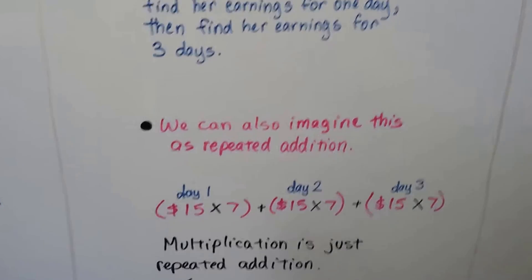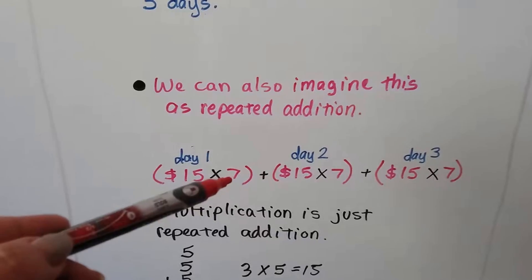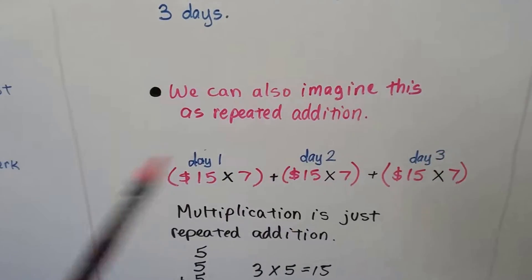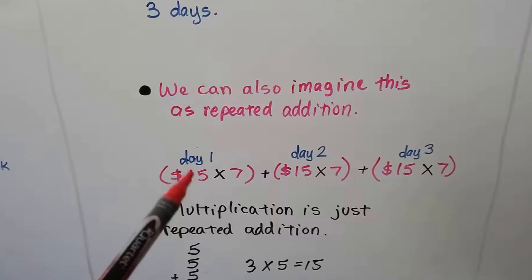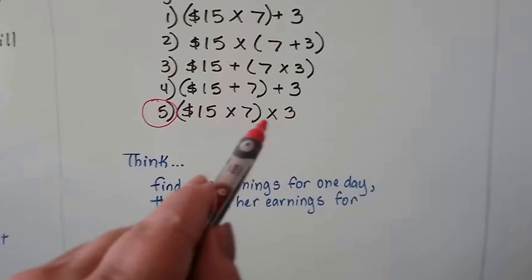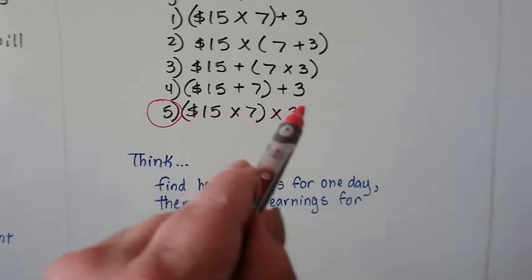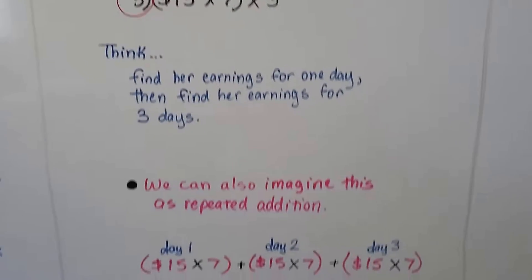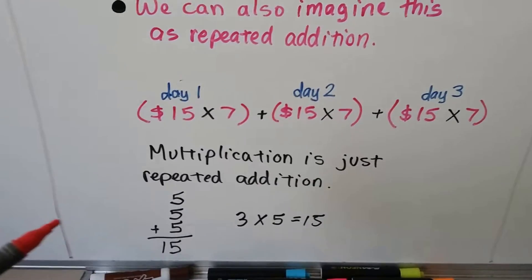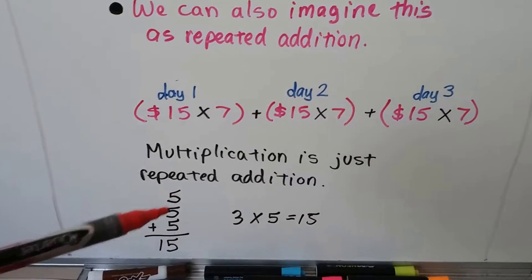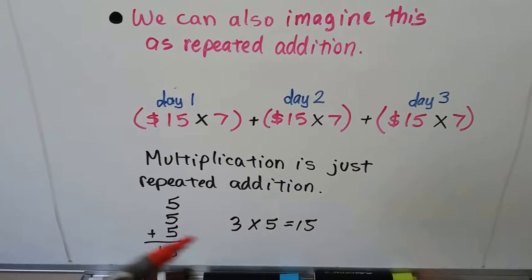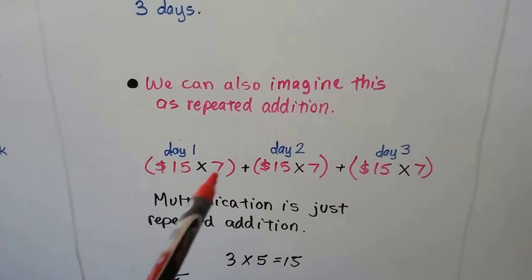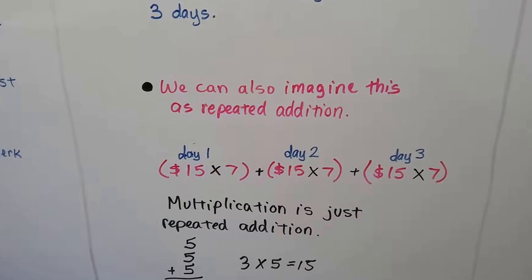We can also imagine this as repeated addition. $15 times seven hours of working one day and doing it again for the second day and doing it again for the third day and then just adding up those days. We have three times 15 times seven. So we have three times 15 times seven. And it doesn't matter if this three is back here or this three is in the front, three times 15 times seven. It doesn't matter the order. It doesn't matter how we multiply the order. So multiplication is just repeated addition. So remember that five plus five plus five equals 15 is the same as three times five equals 15. So we could have done 15 times 21 even and that would have worked out because seven and seven and seven is 21. Three times seven is 21.